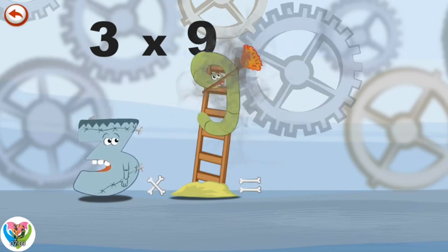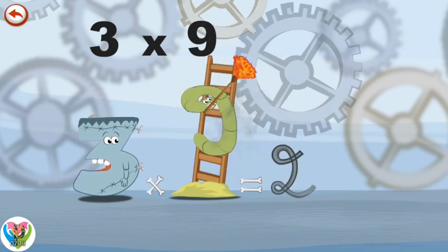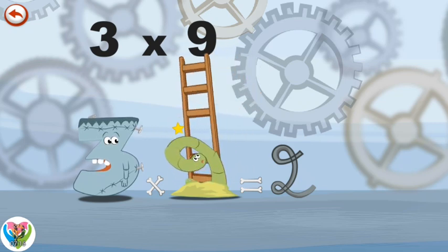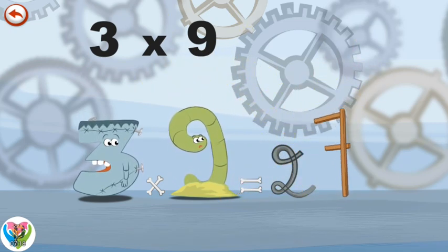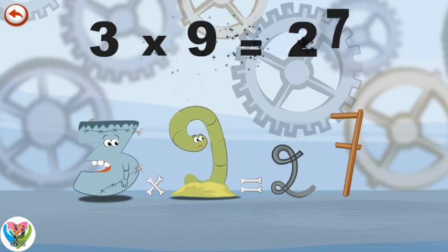Which flies through the air and breaks the rungs of the ladder. Slimy 9 loses his balance and falls off the ladder onto the ground in the shape of a 7. 3 times 9 is 27.